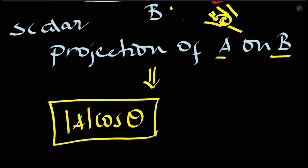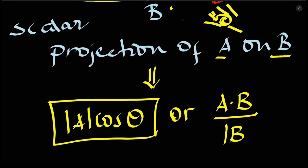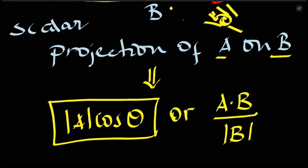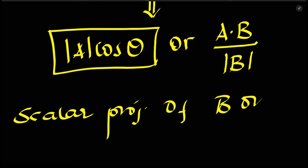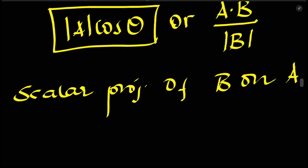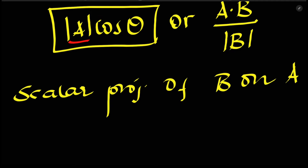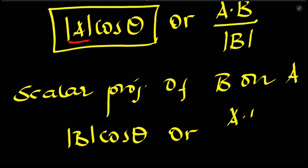The projection of A on B is defined as the magnitude of A times cosine of theta, where theta is the angle between A and B. You can also calculate it using the dot product formula: projection of A on B equals A dot B divided by the magnitude of B.